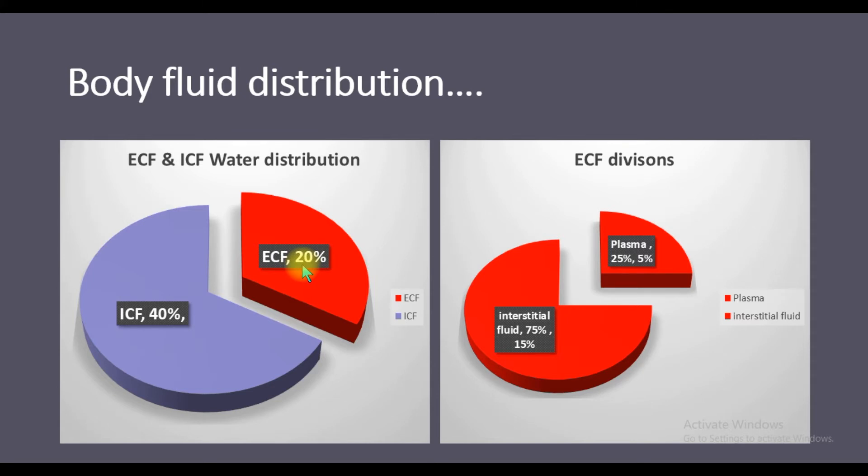In ECF, we have interstitial fluid and plasma. Interstitial fluid constitutes 75% of ECF, so the majority of ECF is approximately 75%, which comes around 15% of total body weight.